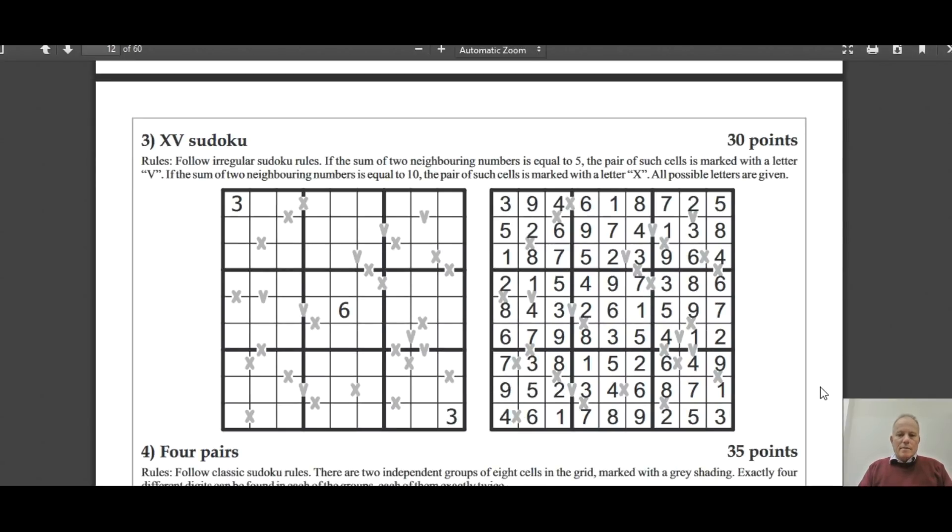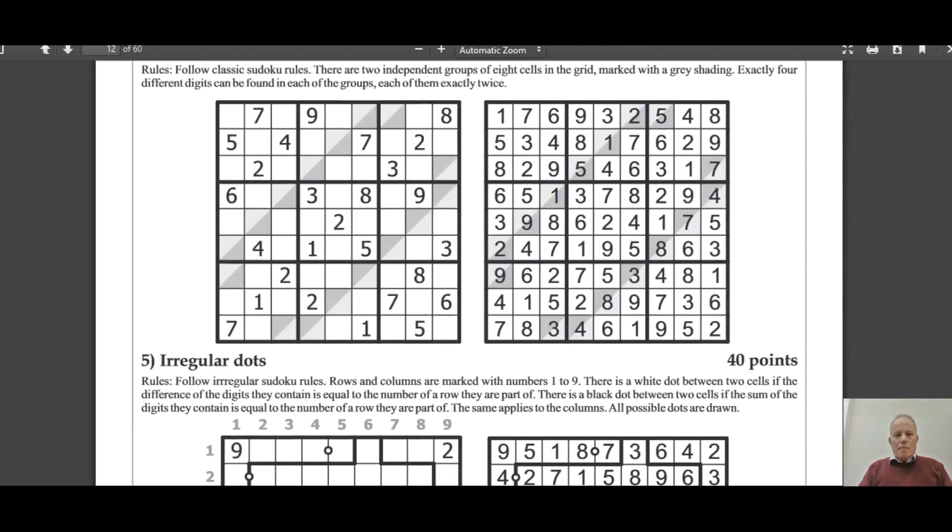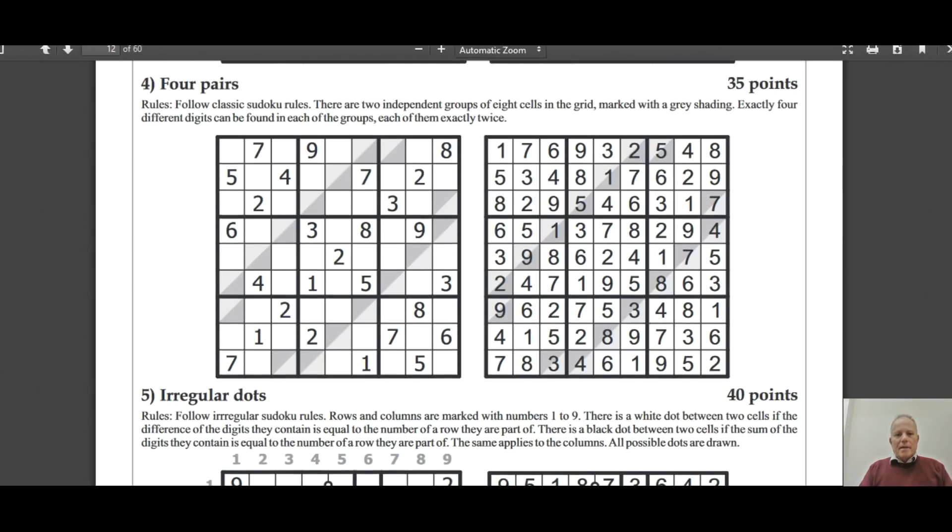This one's XVs, where again relations between cells are marked. Any pair that adds up to 10 or 5 is shown by the roman numeral. That's quite useful and quite a familiar one. Never seen this before - Four Pairs. There are two independent groups of eight cells in the grid marked with the gray shading. Exactly four different digits can be found in each of the groups, each of them exactly twice. So checking what that means on the solution, I've got 5, 2, 1, 5, 1, 9, 2, 9 - two twos, two ones, two fives, and two nines on that gray shading. That's a very unusual constraint. Quite a lot of givens there, so one could begin that with normal sudoku logic I expect.